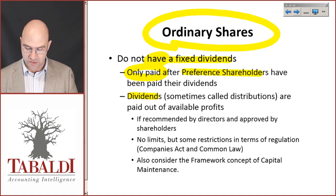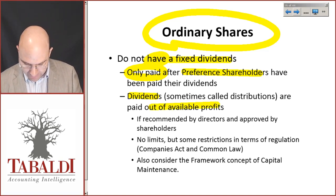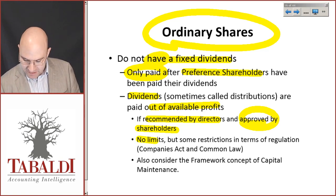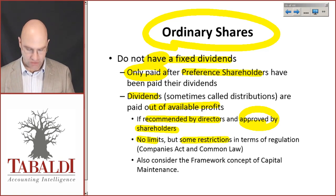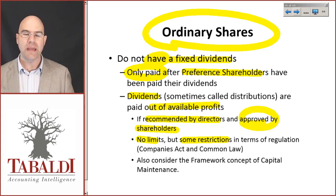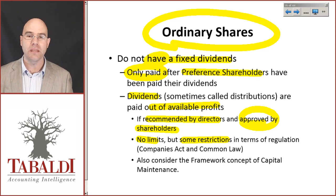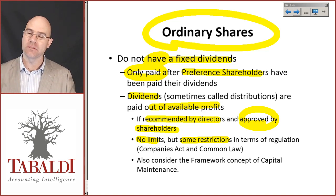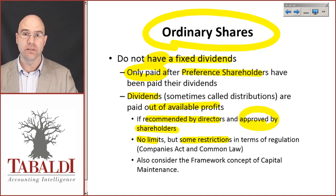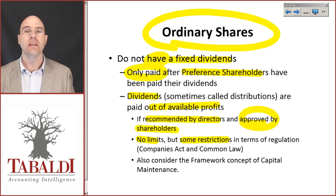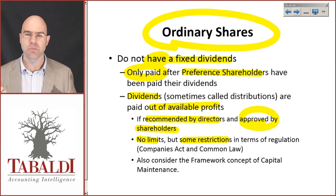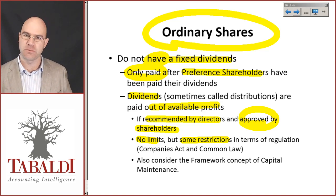Dividends — sometimes still called distributions — are paid out of available profits. They are recommended by the directors and approved by shareholders. There are no limits to this, but there are some regulatory restrictions. Most importantly, you cannot pay a dividend that will result in the company not being solvent (assets exceeding liabilities) and liquid (the company must still be able to pay its debts and bills in the ordinary course of business as they become due, even after the dividends are paid). This is in law so that you cannot just strip the business bare and leave no money to pay creditors.